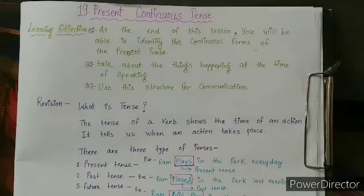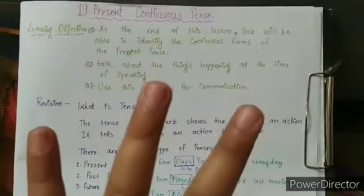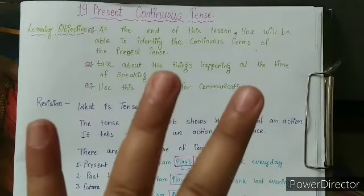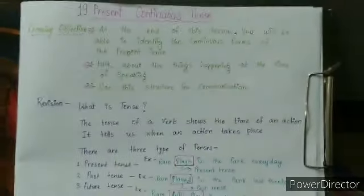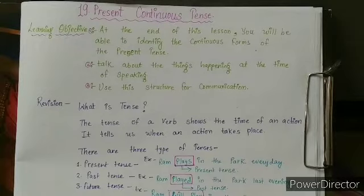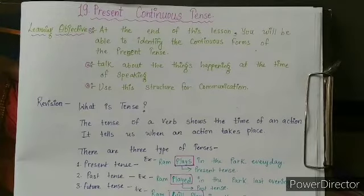There are three types of tenses. What are they? They are Present Tense, Past Tense, and Future Tense.